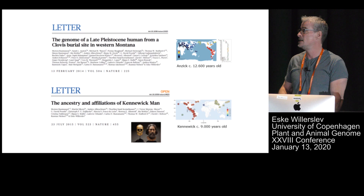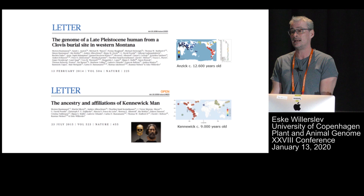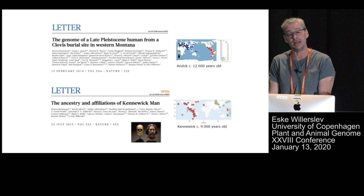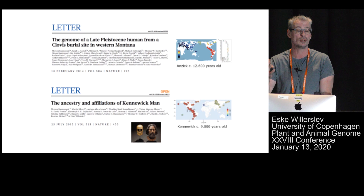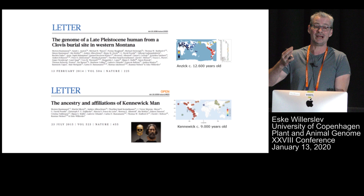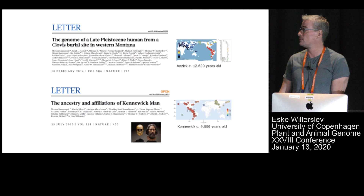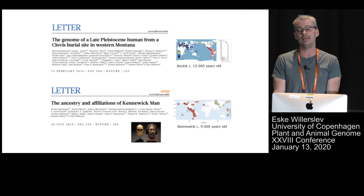Back in 2014, we sequenced the first ancient human genome from America — a skeleton, the only skeleton in fact, that has been found in direct association with the so-called Clovis technology. This is very important because all the different theories have a prediction of who Clovis should be. And what we could see was that this individual, which is around 12,600 years old, is, genetically speaking, basically a Native American.